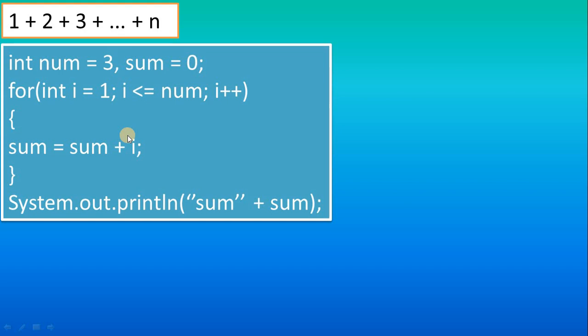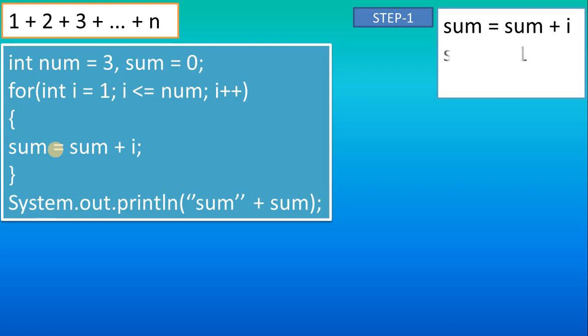In the first iteration it is 1, then second iteration it is 2. How it is working: the i value is now 1, so 1 less than or equal to 3 is true, so it will run this step.